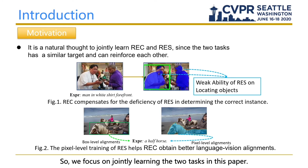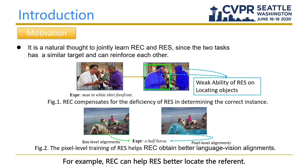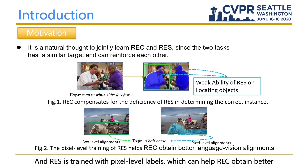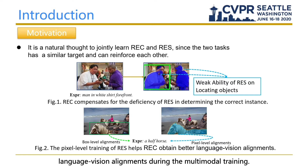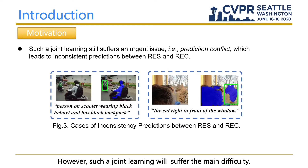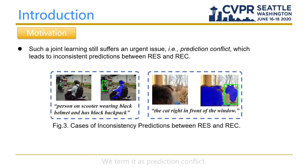So we focus on jointly learning the two tasks in this paper. Such multi-task learning brings several advantages. For example, REC can help RIS better locate the referent, and RIS is trained with pixel-level labels, which can help REC obtain better language-vision alignments during multimodal training. However, such joint learning will suffer a main difficulty — we term it as prediction conflict.